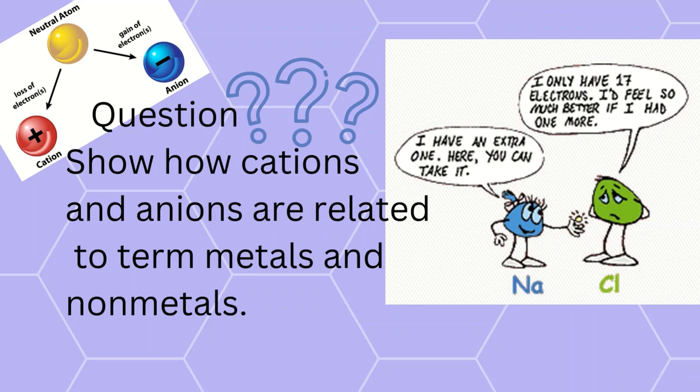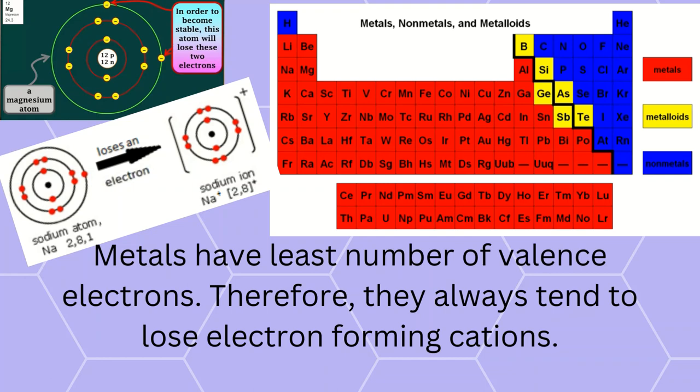How cations and anions are related to metals and non-metals. Metals have the least number of valence electrons, therefore they always tend to lose electrons forming cations. Metals are located on the left of the periodic table, red color elements are metal.